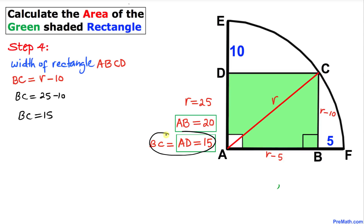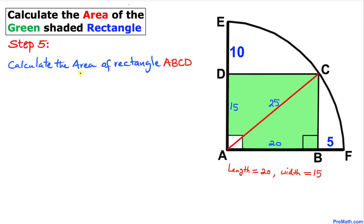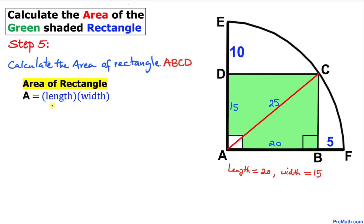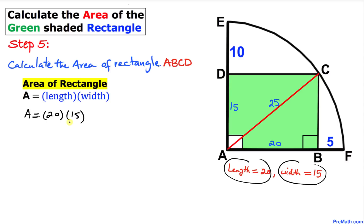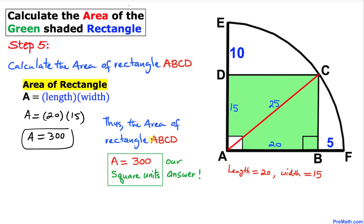Here's our final step: let's calculate the area of rectangle ABCD. The area formula is Area = length × width. In our case, length is 20 and width is 15, so Area = 20 × 15 = 300. Thus the area of rectangle ABCD turns out to be 300 square units, and that's our final answer. Thanks for watching and please don't forget to subscribe to my channel for more exciting videos.